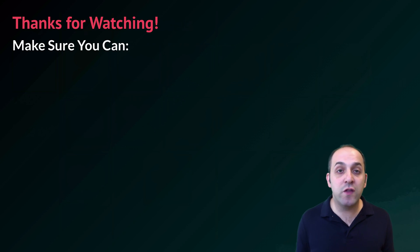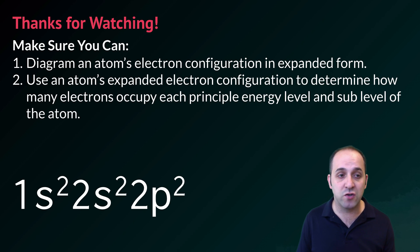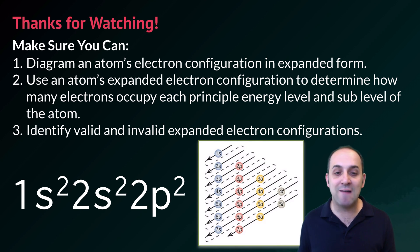Thanks so much for watching. Make sure that you can do the following things here at the end. Make sure that you can diagram an atom's electron configuration in expanded form. If I give you an atom off the periodic table, you should be able to figure out its electron configuration and represent it as an expanded configuration. Also make sure that you can use an atom's expanded electron configuration to figure out how many electrons occupy each principal energy level and sublevel of the atom. Can you take an expanded configuration and convert it back into a basic configuration? Finally, make sure that you can identify valid and invalid expanded electron configurations.